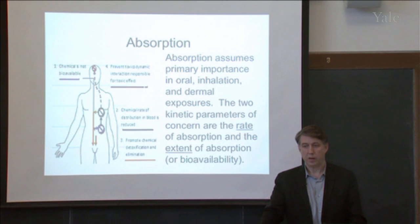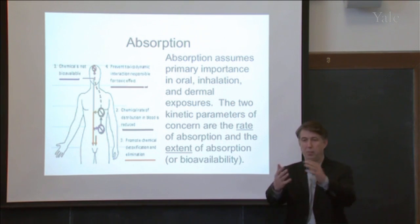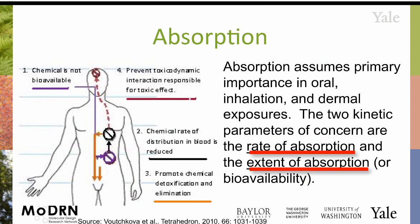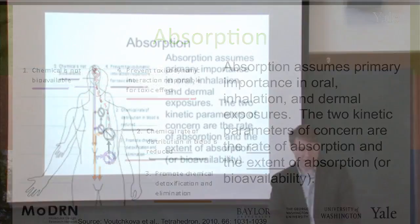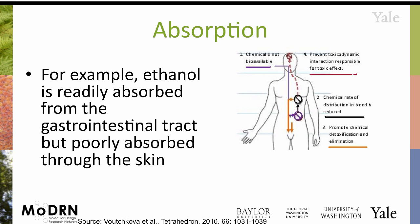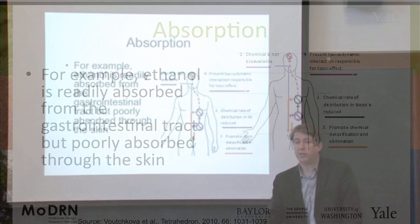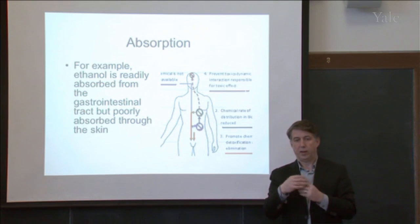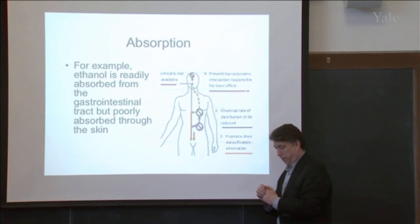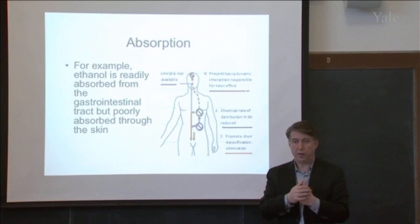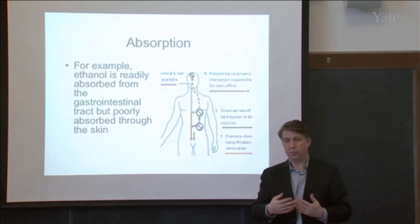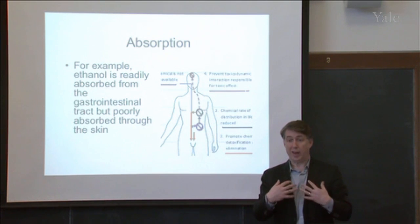Skin absorption — different membranes can transport across dermal membranes, across the eyes. It's the rate of absorption and the extent of absorption — bioavailability — that is crucial. One example is ethanol: it's readily absorbed through the GI tract, but it's almost not absorbed at all through the skin. When you think about how to manipulate a molecule so that it is not bioavailable, you need to know the properties of the skin, the lungs, and the GI tract.